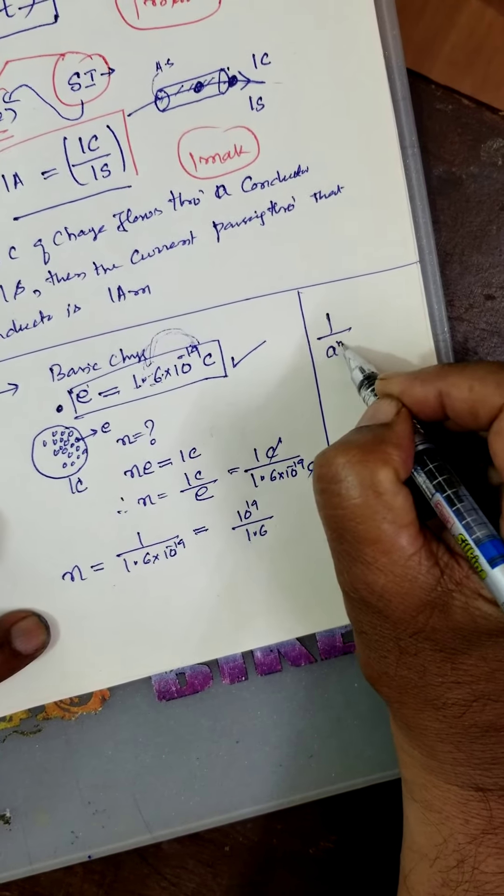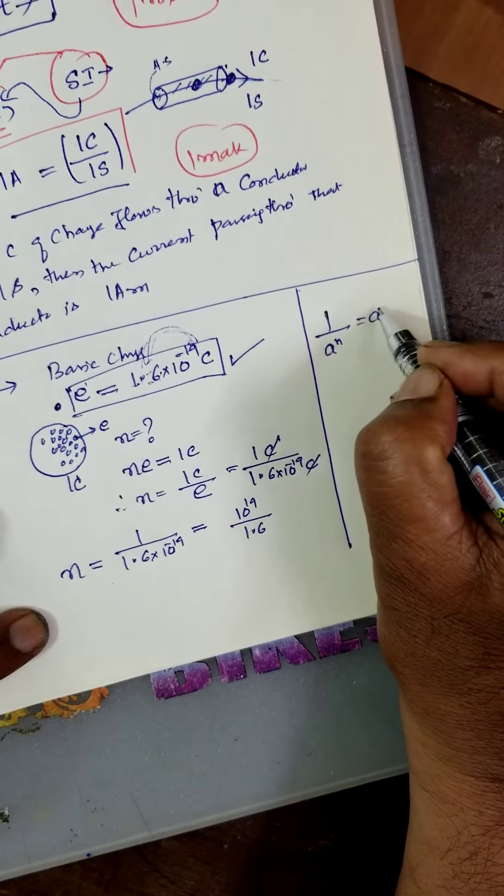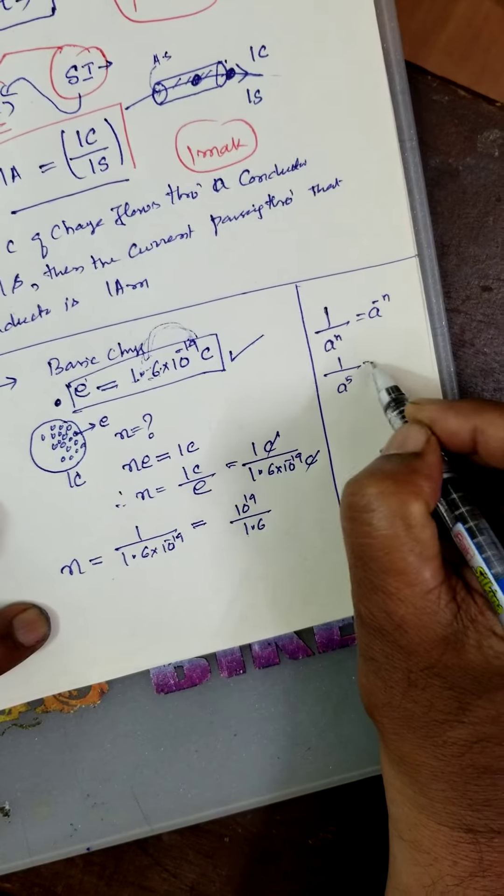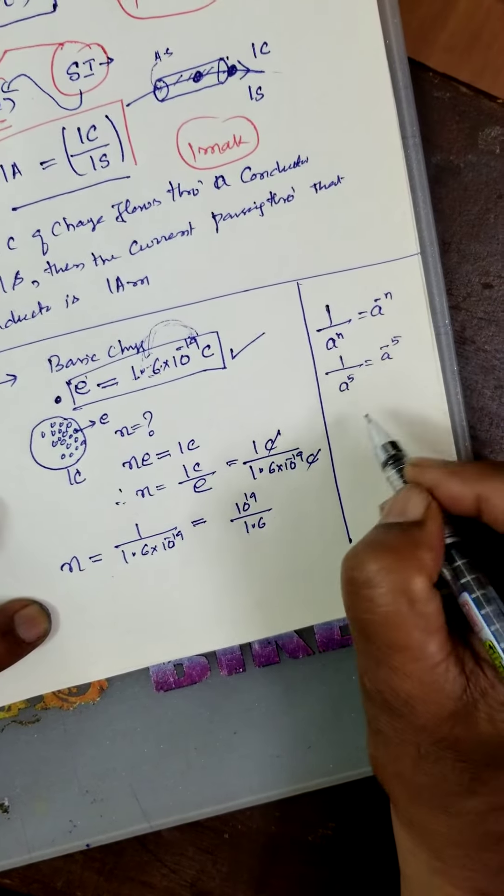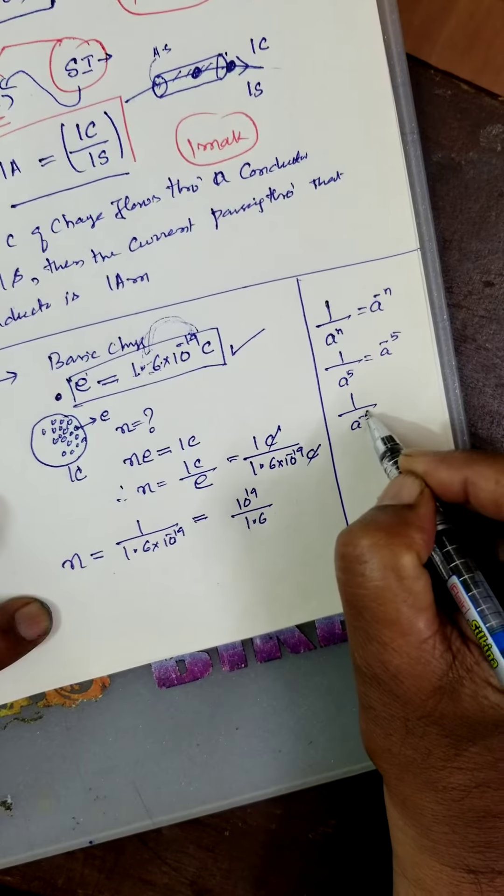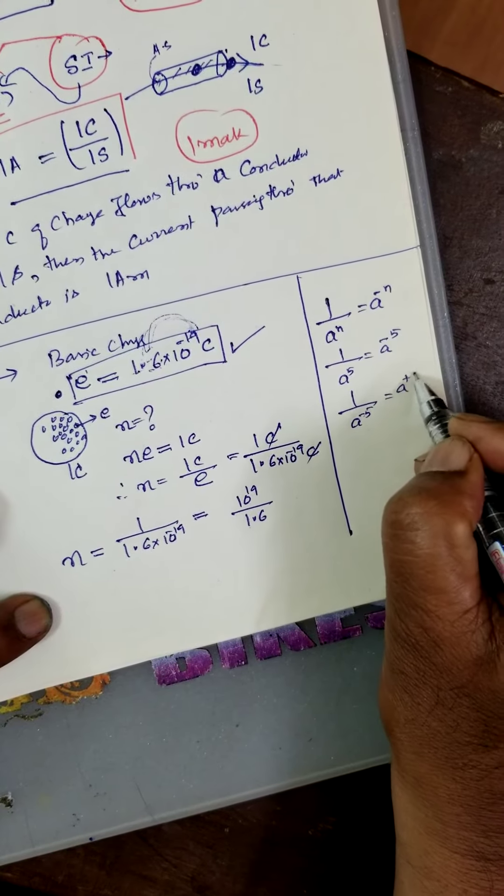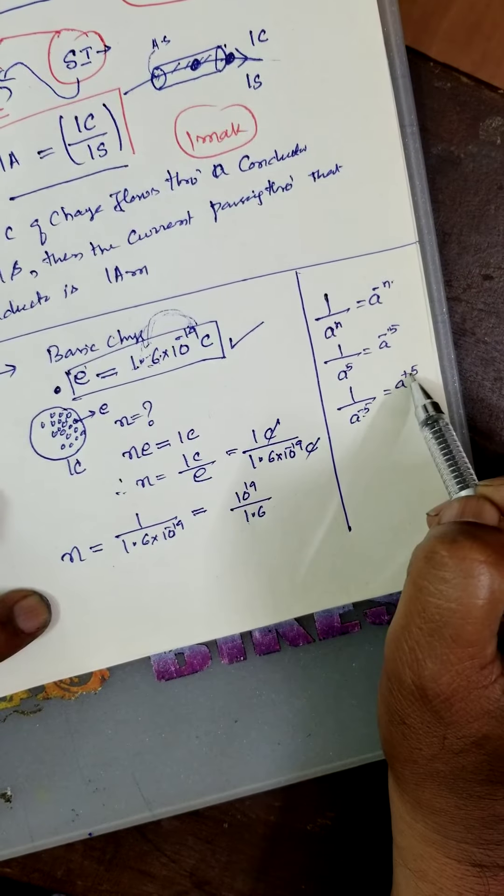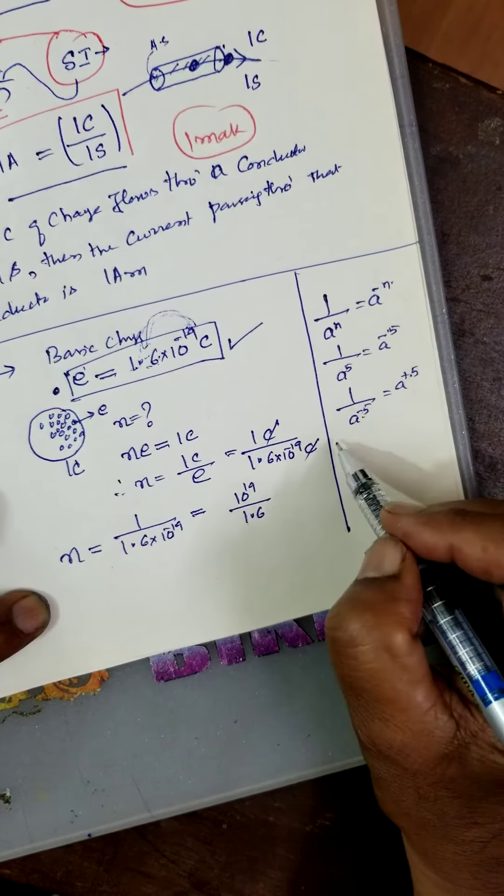If I take any number to the numerator, minus n. For example, a to the power of 5. Minus a to the power of 5. If a to the power of minus 5 is there, sign changes. Here, plus it becomes minus. Plus becomes minus, minus becomes plus. Same way here also.